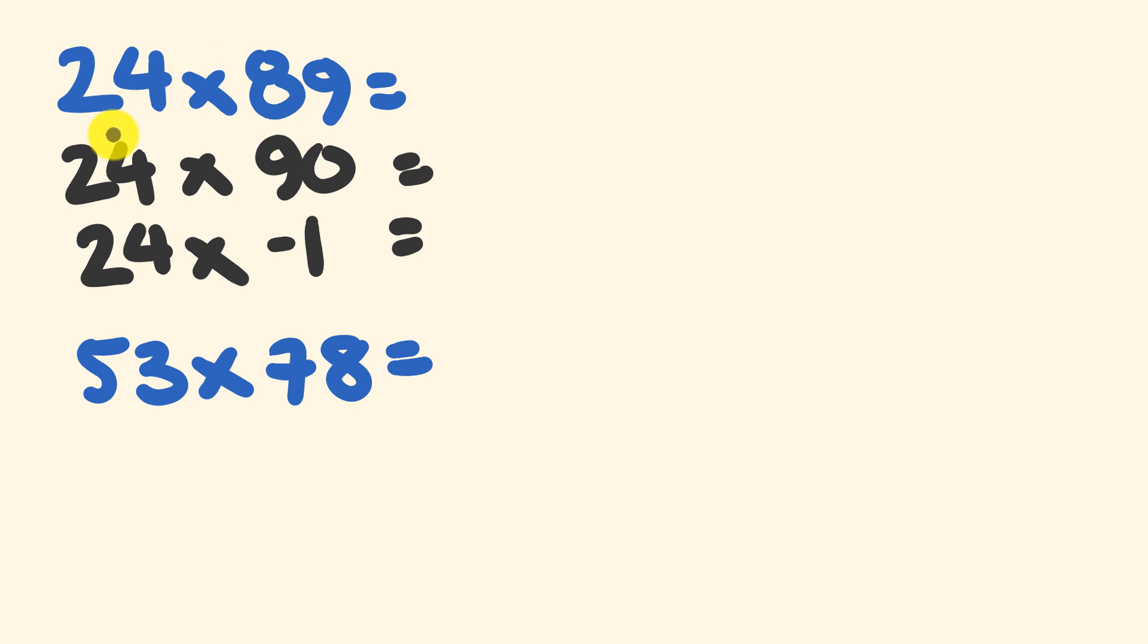So 24 multiplied by 90. We have 20 by 90, which is 1800 plus 360, so we have 2160. And from this, we're going to be subtracting 24. So what do we get when we do that? We get our final answer of 2136.